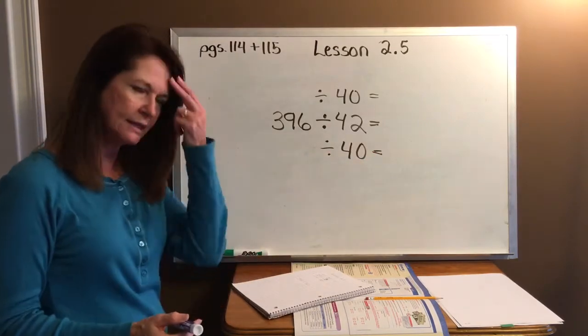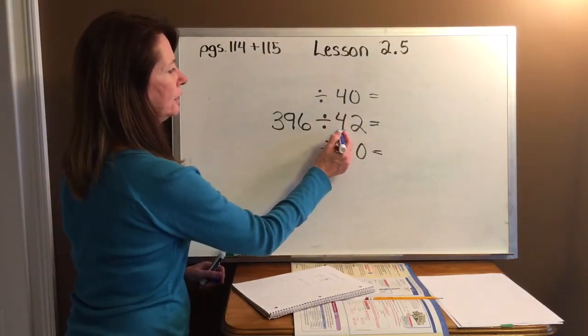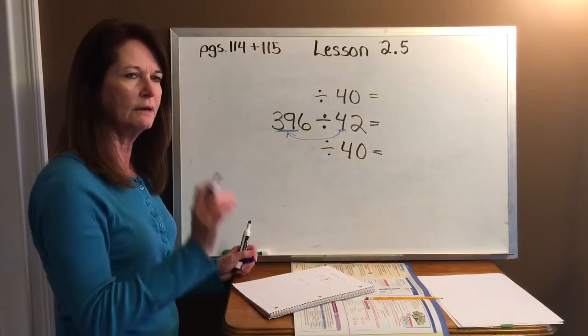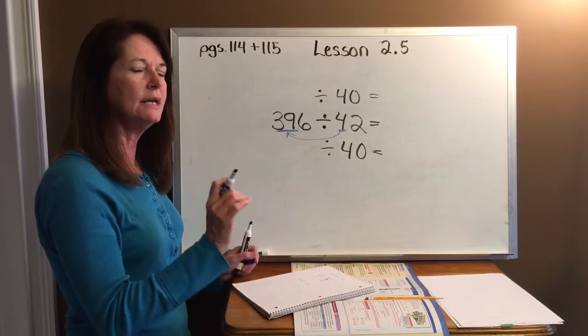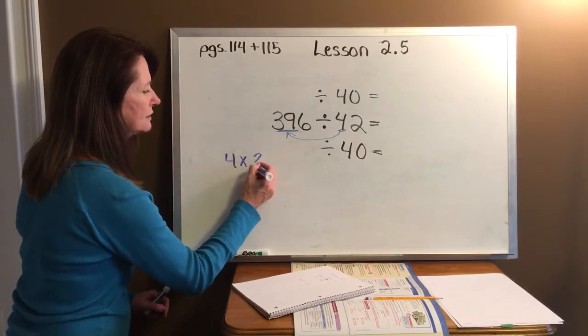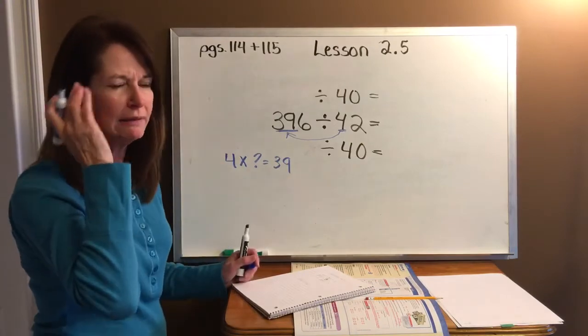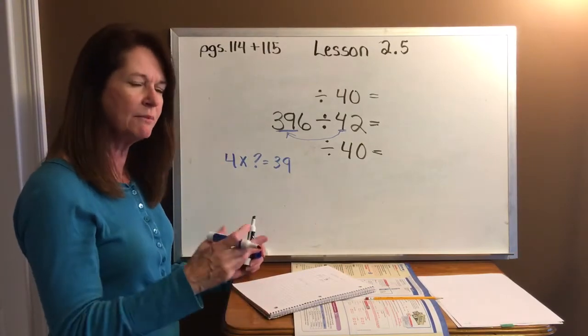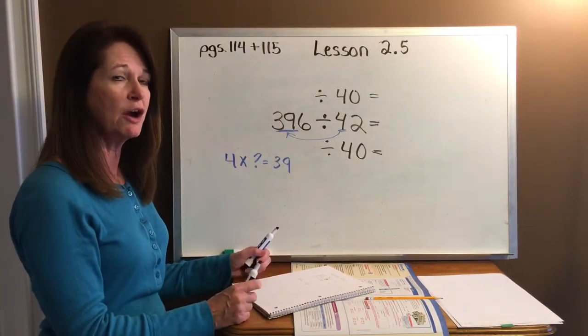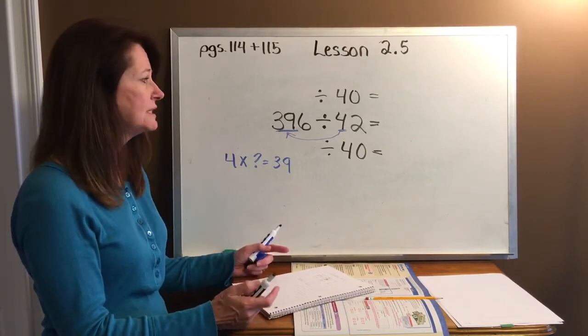One's going to be our higher estimation of our answer, and one's going to be our lower estimation of our answer. Now, thought process. What's going on in my head, right? I'm thinking 4 times what is close to 36. 4 times what is close to 39. So I'm going like this. 4 times what is close to 39. This blue stuff is in my brain. I'm thinking through that. All right. Fast facts. This is what you should know. 4 times 9 is 36.